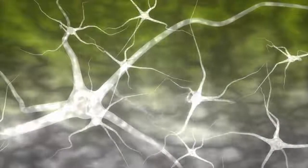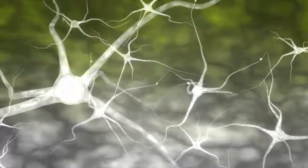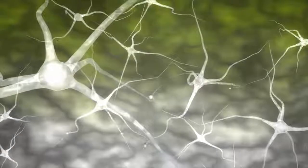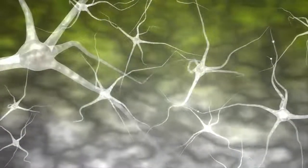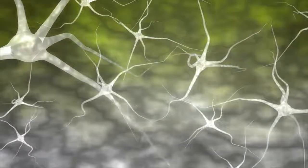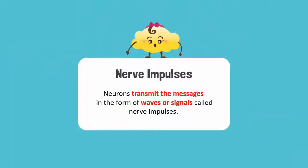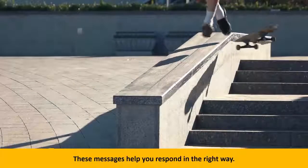The nervous system works with the help of nerve cells or neurons. They transmit or receive the messages between different parts of the nervous system. Neurons transmit the messages in the form of waves or signals called nerve impulses. These messages help you respond in the right way.